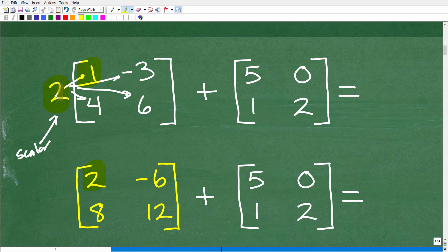So 2 times 1 is what? 2, 2 times negative 3, negative 6, 2 times 4 is 8, and 2 times 6 is 12. All right, so that's scalar multiplication. That's the first thing we need to do.